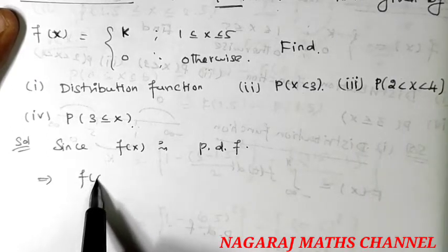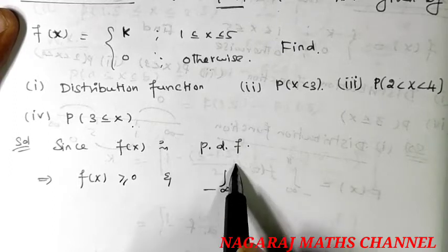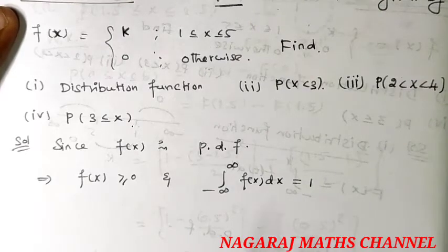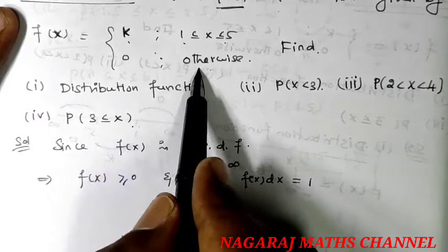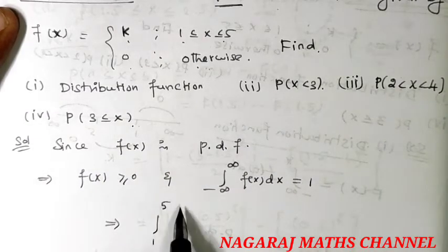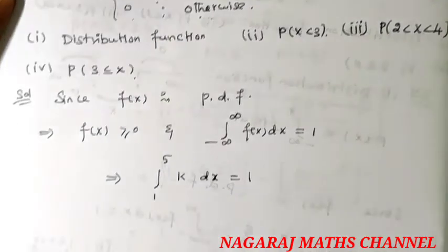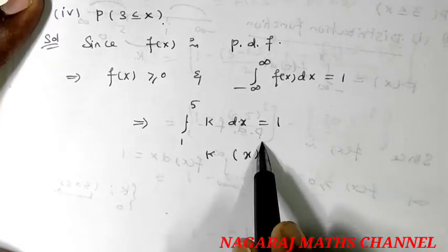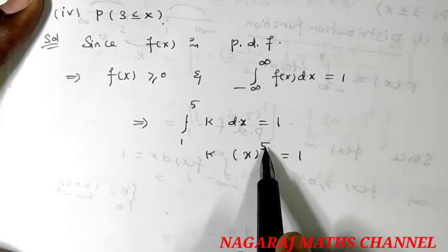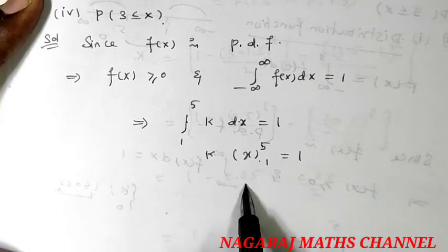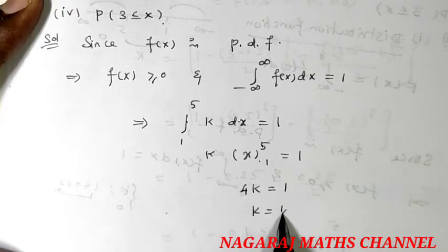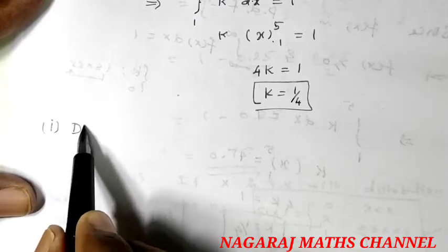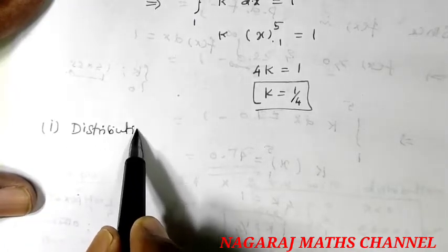Since f(x) is a probability density function, it implies f(x) ≥ 0 and the integral from minus infinity to plus infinity of f(x) dx = 1. So the integral from 1 to 5 equals 1. The integration of k dx equals k·x, with upper limit 5 and lower limit 1. So 5 minus 1 equals 4, giving 4k = 1, therefore k = 1/4.